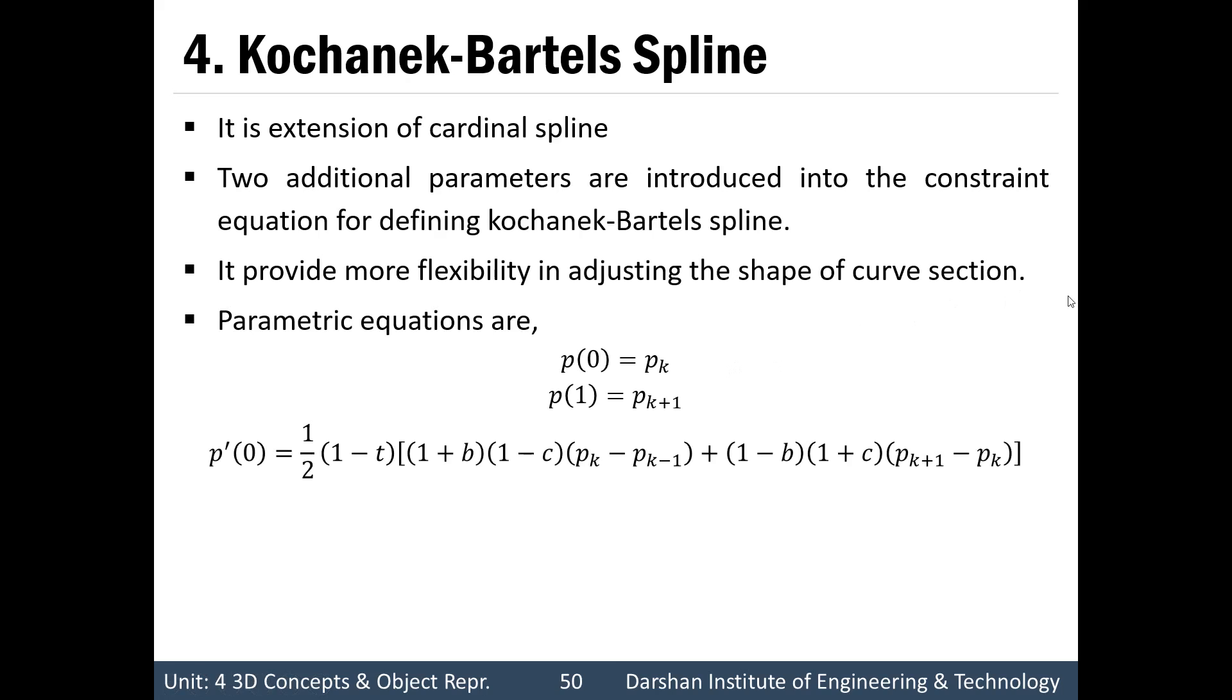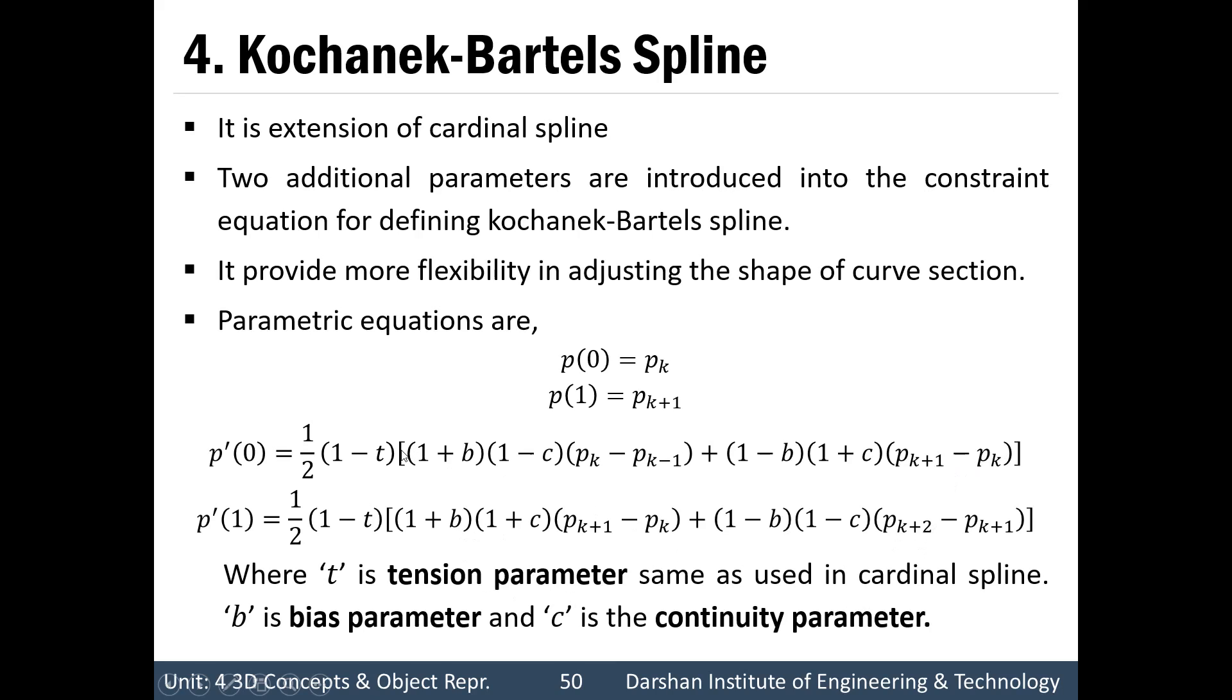Because there are two extra parameters, the parametric equations will be p(0) equals to pk, p(1) equals to pk+1 and p'(0) will equal 1/2 times (1-t) times [(1+b)(1-c)(pk-pk-1) + (1-b)(1+c)(pk+1-pk)]. And similarly for p'(1). Here 2 parameters that is b and c are introduced as new parameters. B is bias parameter and c is continuity parameter and t parameter is same as cardinal spline, the tension parameter.